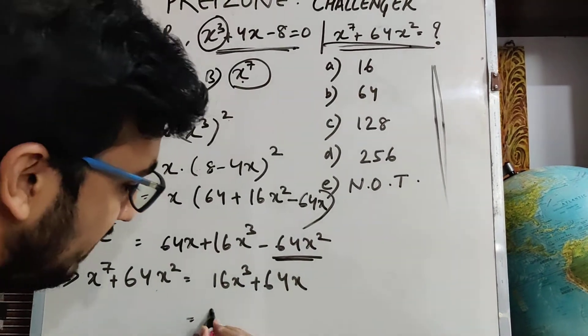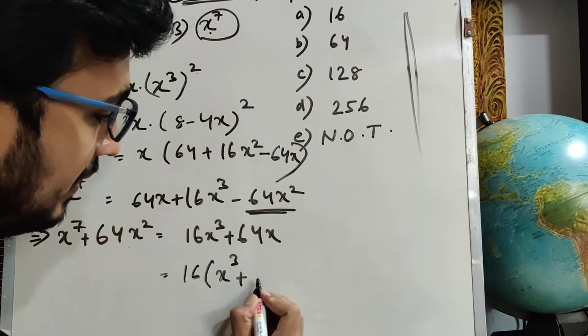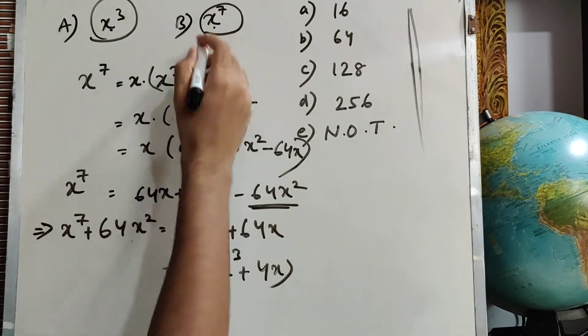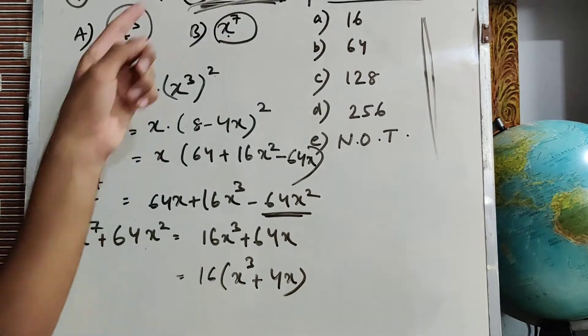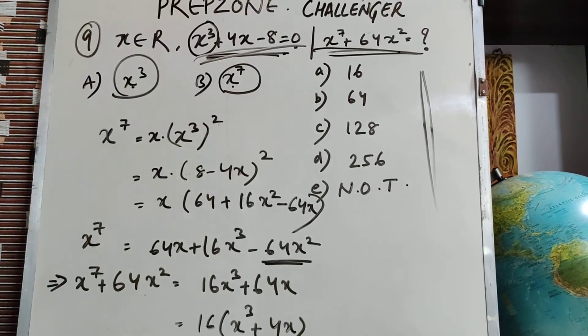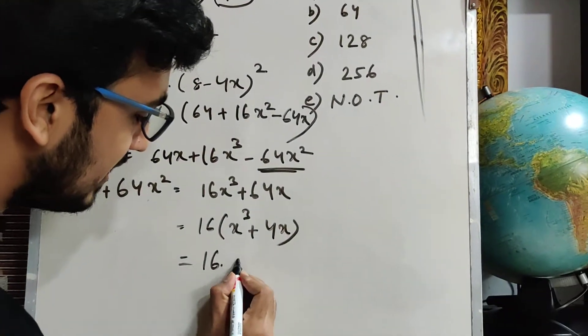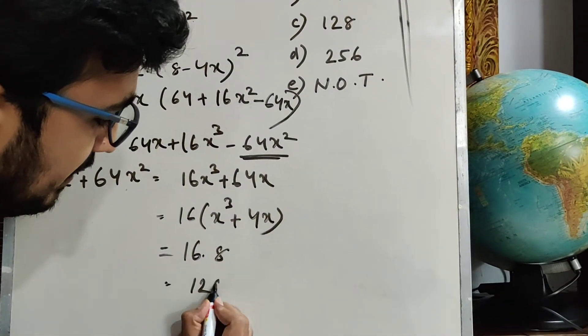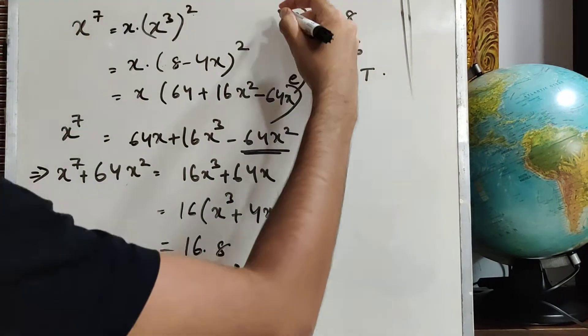What will I do? Take 16 commonly: 16(x³ + 4x). Now from the equation, it is given that x³ + 4x value is 8. So I will simply put 16 times 8. How much? Your answer is 128. So the answer will be C.